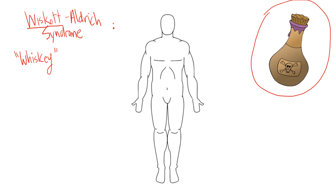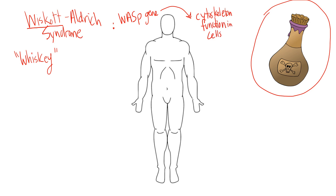Wiskott-Aldrich Syndrome occurs when a patient has a mutation or defect in what's called the WASP gene — the Wiskott-Aldrich Syndrome Protein gene. When this is mutated, this gene is theorized to affect cytoskeleton function in cells, specifically the cytoskeleton's ability to link cell membrane receptors to the cell surface. You can imagine the problems that causes when you think about how immunology works — all the receptors involved with T cells and B cells.